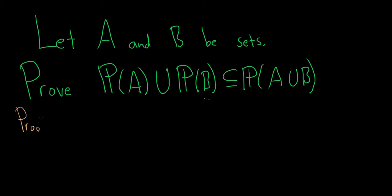Proof. To show that one set is a subset of another, we have to show that every element in one set is also in the other set. So we start by taking an element in this set, and then we just have to show that it belongs in this set. Keep in mind that the elements in these sets are actually sets. The power set of A is the set of all subsets of A. Likewise, the power set of B is the set of all subsets of B. So we'll start by taking a set in this union.